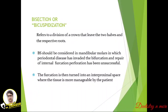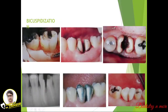Bicuspidization should be considered for mandibular molars when periodontal disease has invaded the bifurcation and repair of internal furcation perforation has been unsuccessful. The furcation is then turned into an interproximal space, making it more manageable by the patient. Once healed, the patient will be able to clean the teeth, or they can be crowned or treated as two separate premolars.